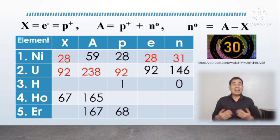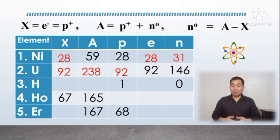Time is over. Let's check your answers. For item number 3, X must be 1, a must also be 1, and e is equal to 1. For item number 4, p must be 67, e must also be 67, and n is equal to 98. For item number 5, X is equal to 68, e must also be equal to 68, and n must be equal to 99.